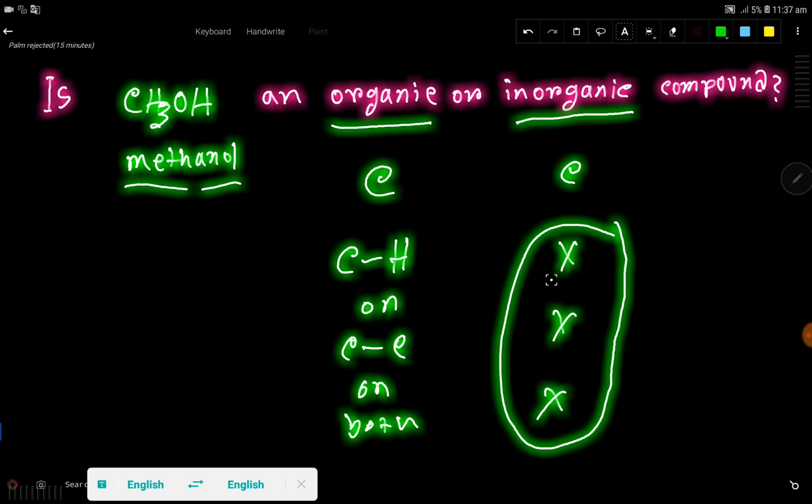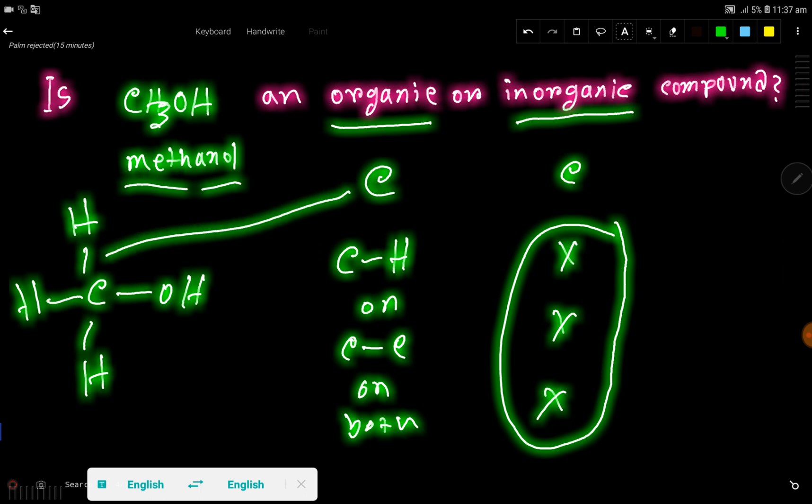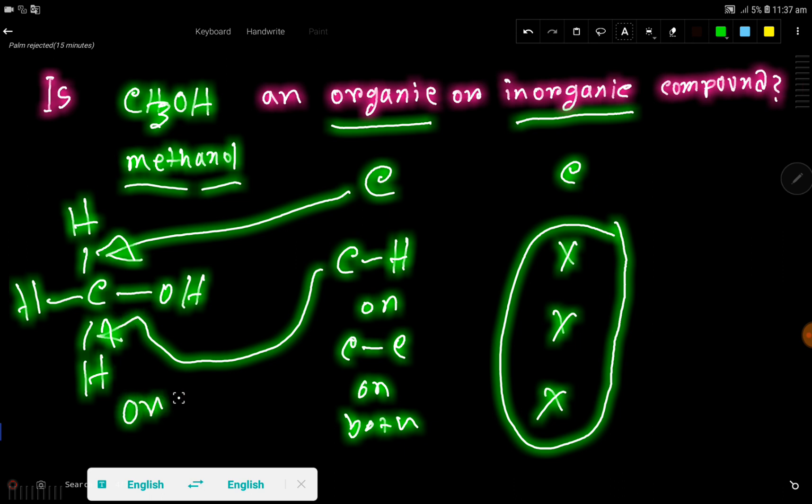Now check for methanol. In methanol we have carbon. First of all we have carbon, then we have carbon-hydrogen bond. So we can say that methanol is an organic compound.